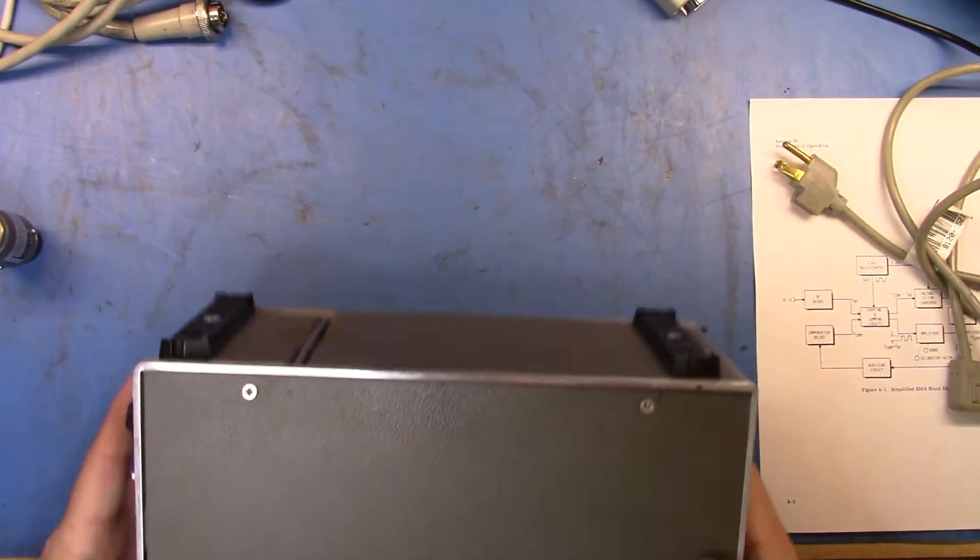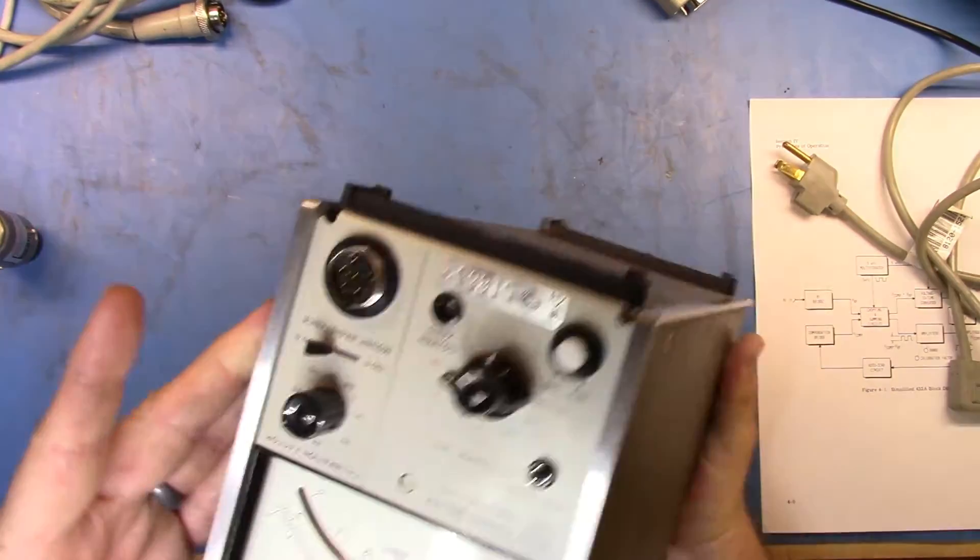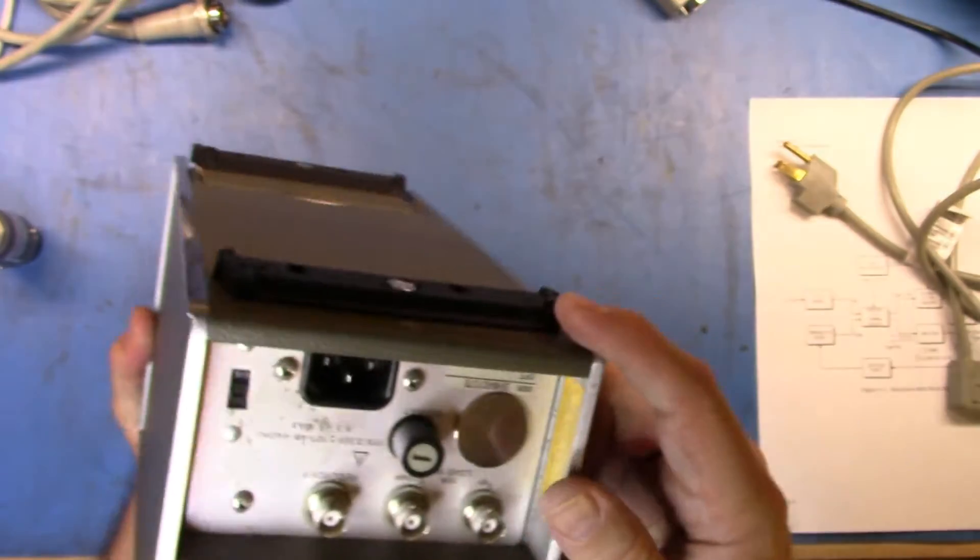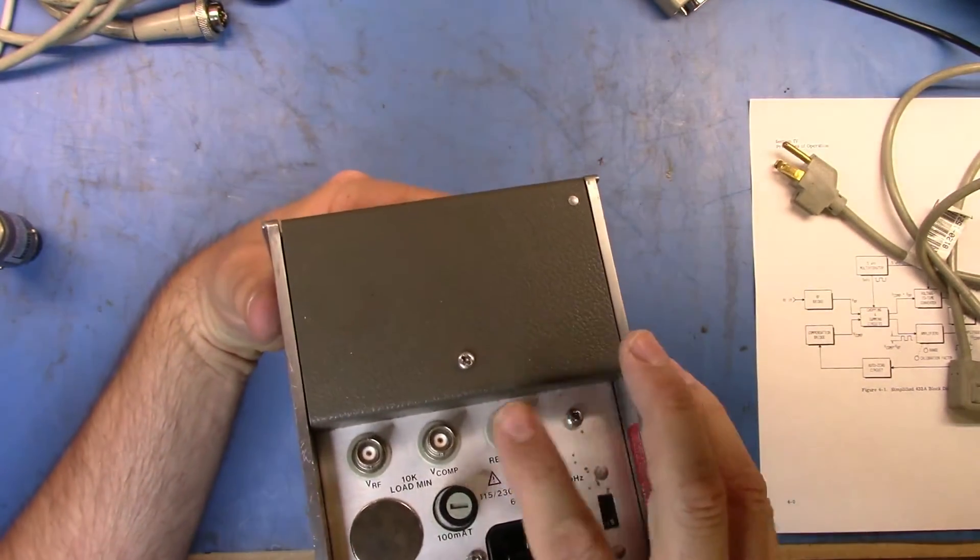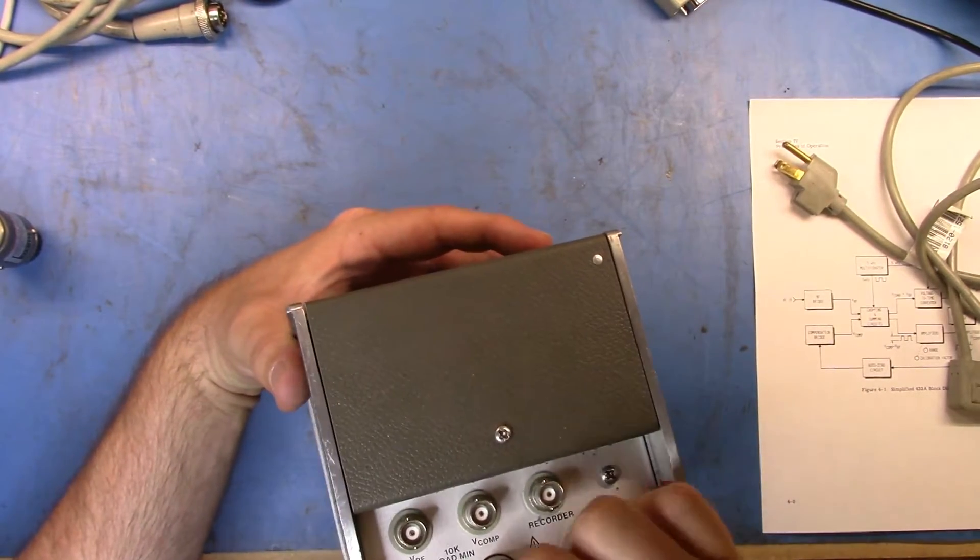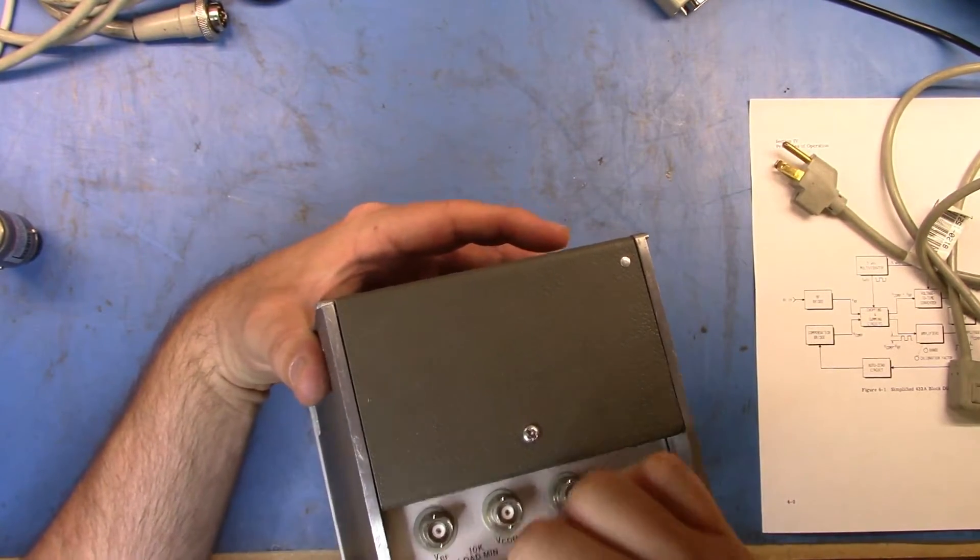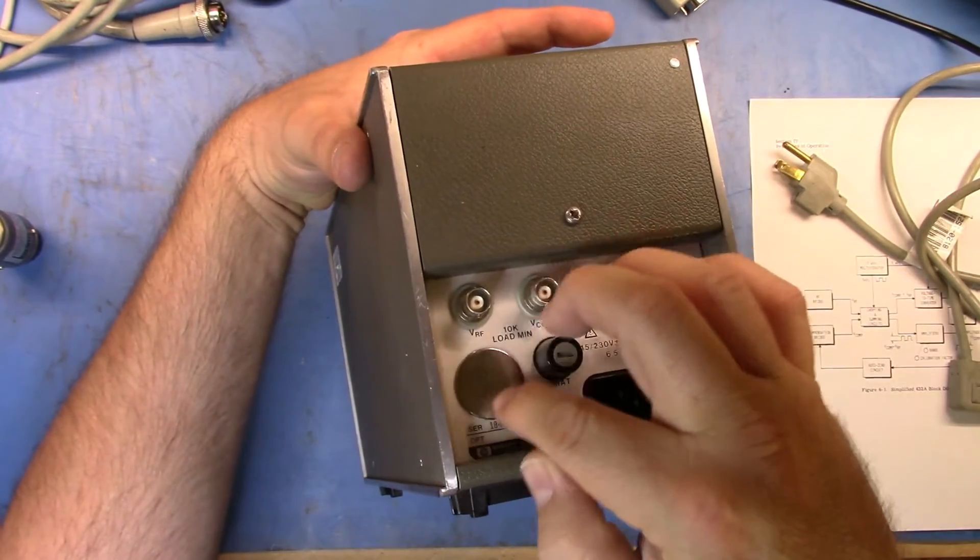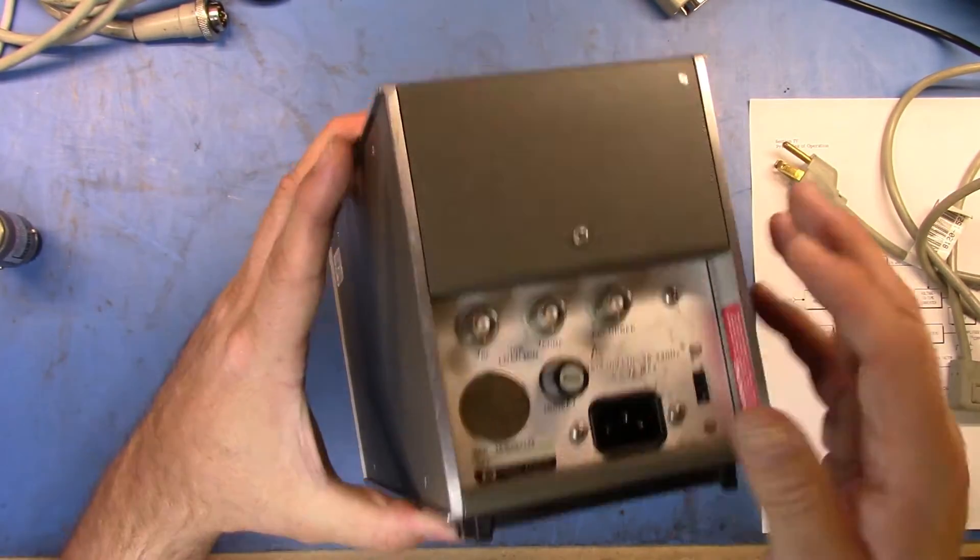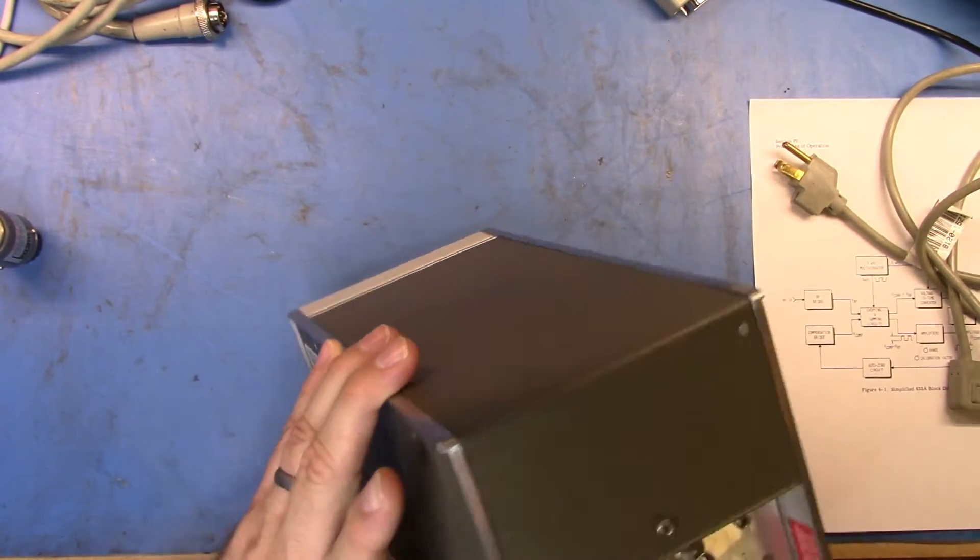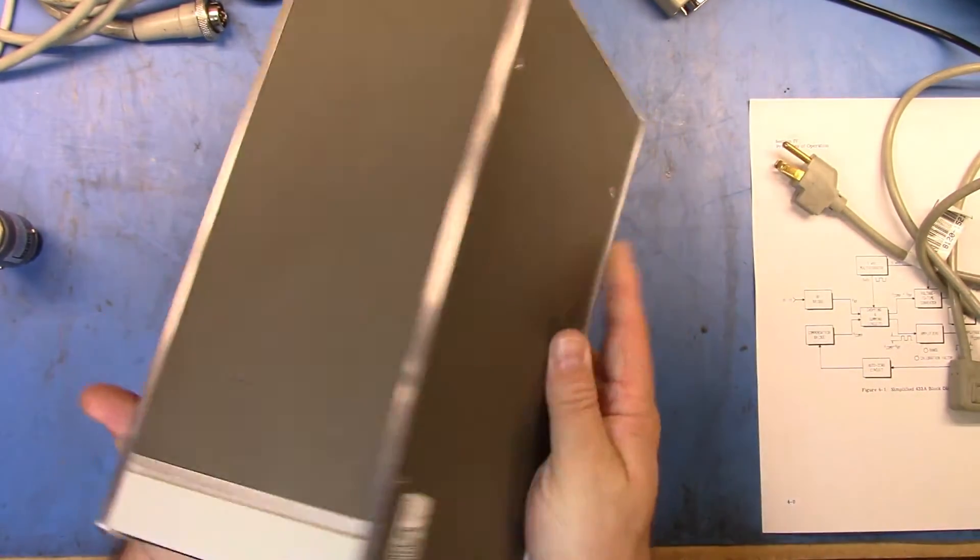If you look at this meter, you can see that it's in pretty damn good nick. I gave it a little clean up with some IPA before we videoed. On the back here, the BNC connectors are quite clean. A lot of times you'll see a lot of rust on these, but overall I think this is in pretty good condition.